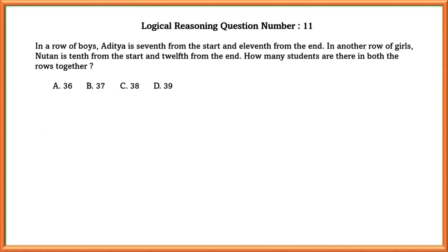Logical reasoning question number eleven: in a row of boys, Aditya is 7th from the start and 11th from the end. In another row of girls, Nutan is 10th from the start and 12th from the end. How many students are there in both rows together?